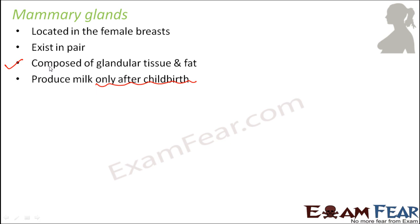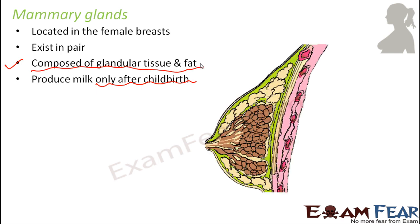Let us have a look at the detailed structure of the mammary glands. In each mammary gland you can actually see a lot of fat — the green colored structures you see here are all fat. The remaining tissues are all glandular tissue. So the mammary gland has both fat and glandular tissue components.